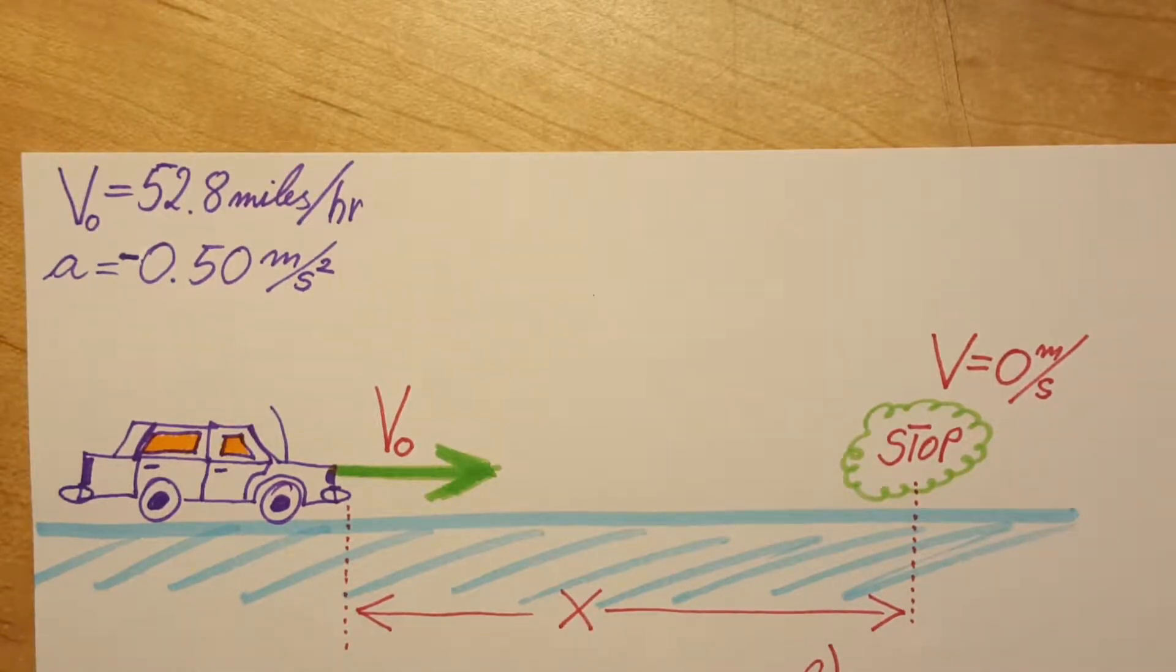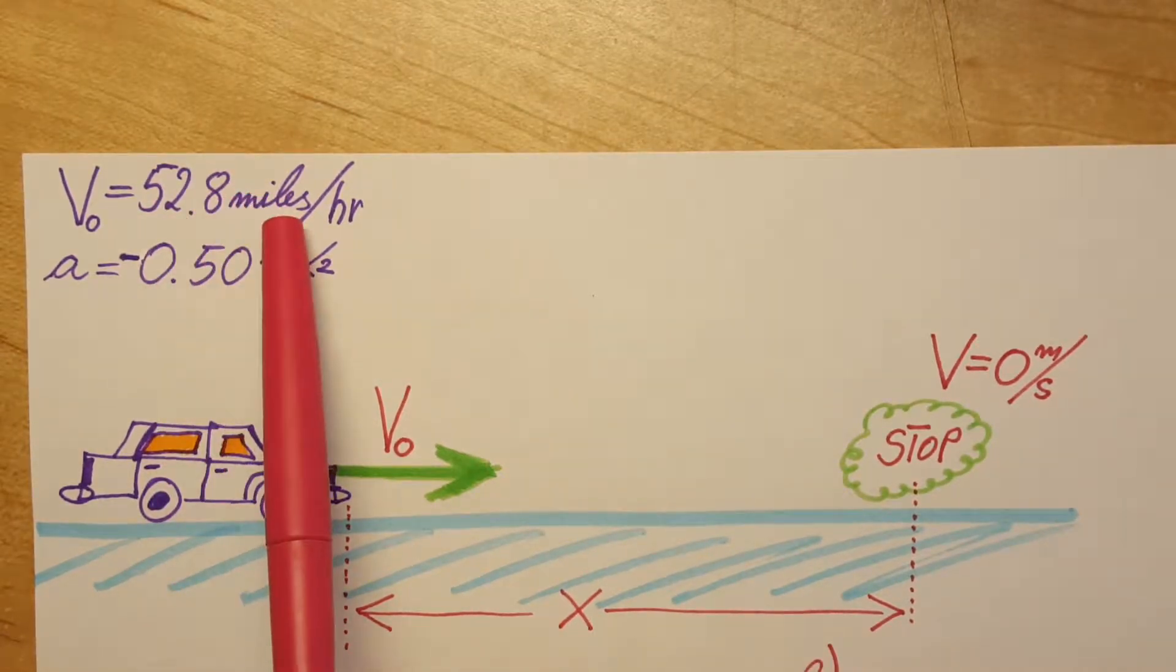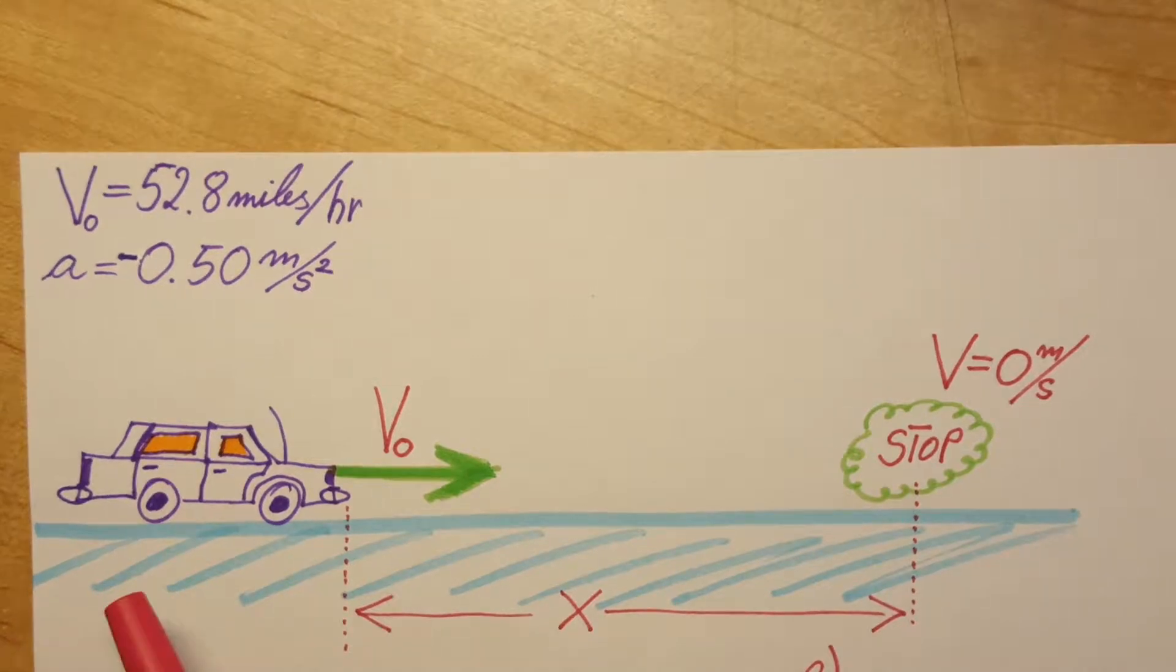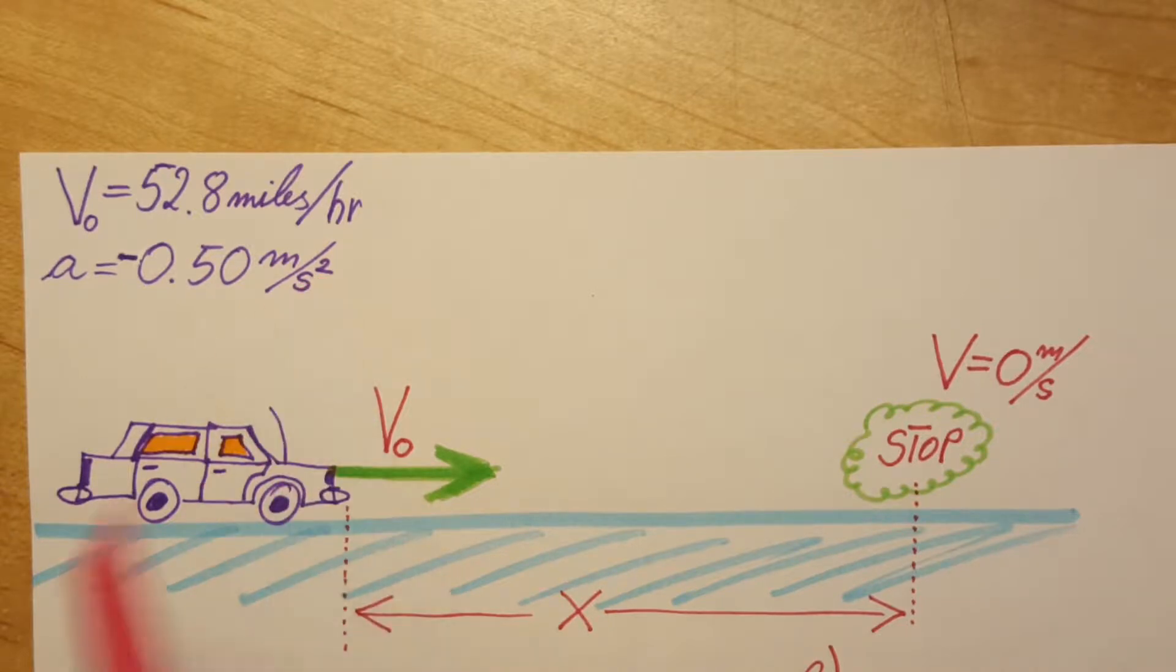In this physics problem, we have a car traveling at 52.8 miles per hour, then it slows down with a constant acceleration of 0.50 meters per second squared, just by lifting its foot off the gas. They want us to calculate the distance that this car will coast until it stops.